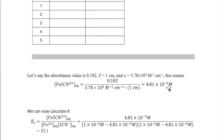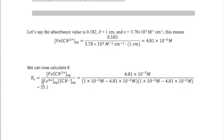If we plug all of these numbers into the equation, we get the equilibrium concentration of iron thiocyanate as 4.81 times 10 to the minus 5 molar. Using the K expression and all the values that we just calculated, we can obtain an equilibrium constant value of 53.1 for mixture 1.